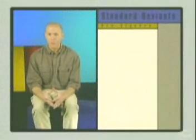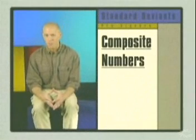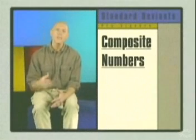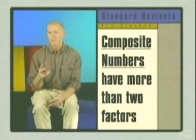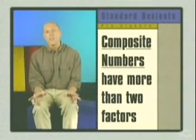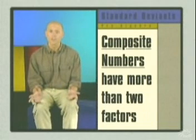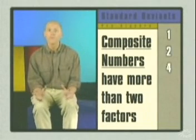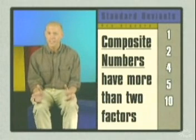These numbers we just factored are examples of something called composite numbers, which means they have more than 2 factors. For example, the number 20 is composite because it has 6 factors: 1, 2, 4, 5, 10, and 20.